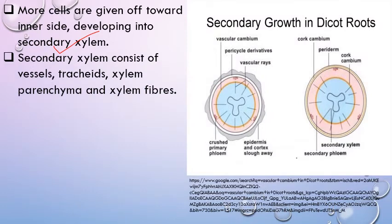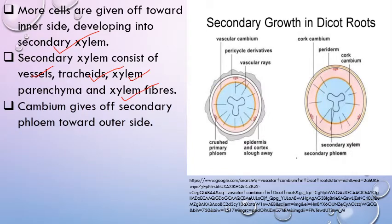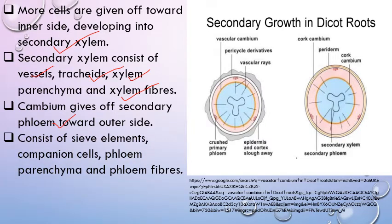Cells given off towards the inner side are more in number and form secondary xylem. Secondary xylem consists of vessels, tracheids, xylem fiber parenchyma, and xylem fibers. Cambium gives off secondary phloem towards the outer side. The components of secondary phloem are sieve elements, companion cells, phloem parenchyma, and phloem fibers.